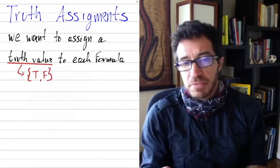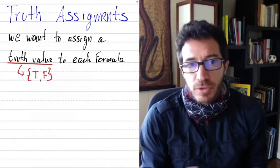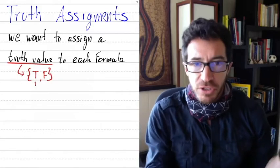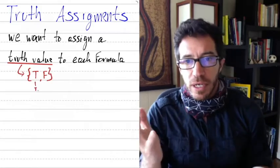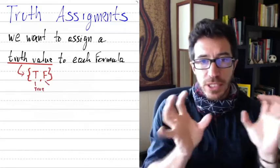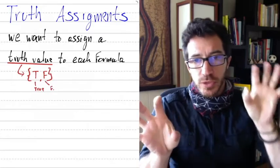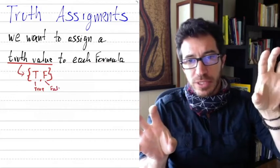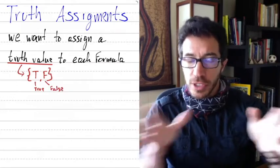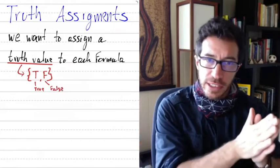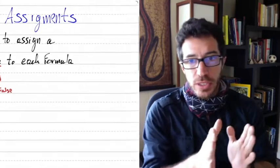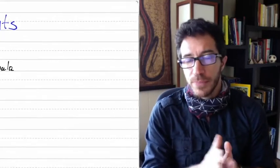Sometimes you could think of them as 0 or 1, yes or no, whatever you want. Essentially there are two values: one represents truth and one represents false. So we want to assign these values to each formula.